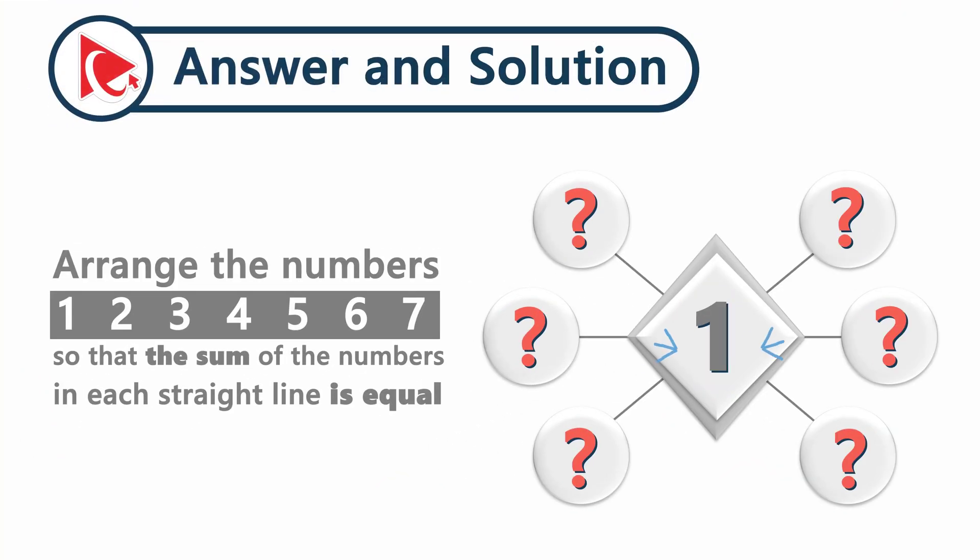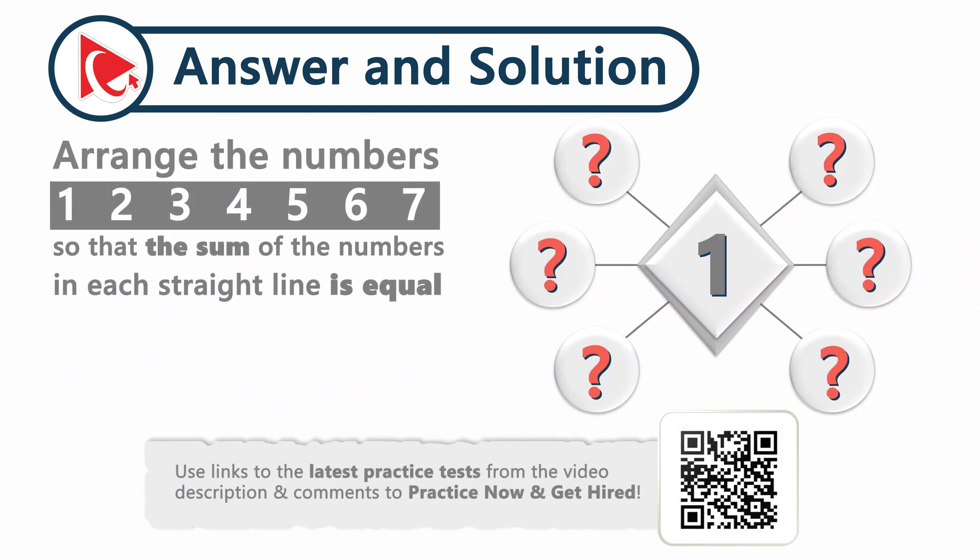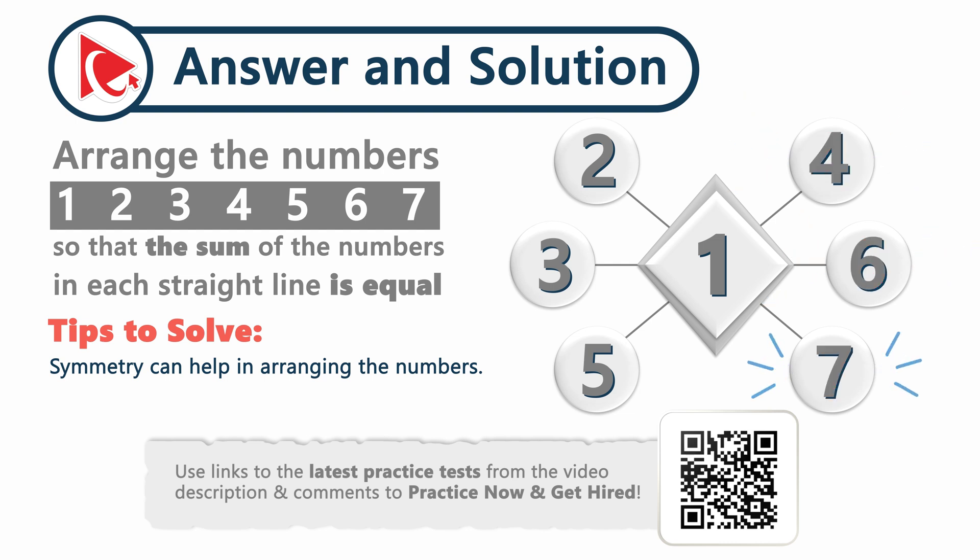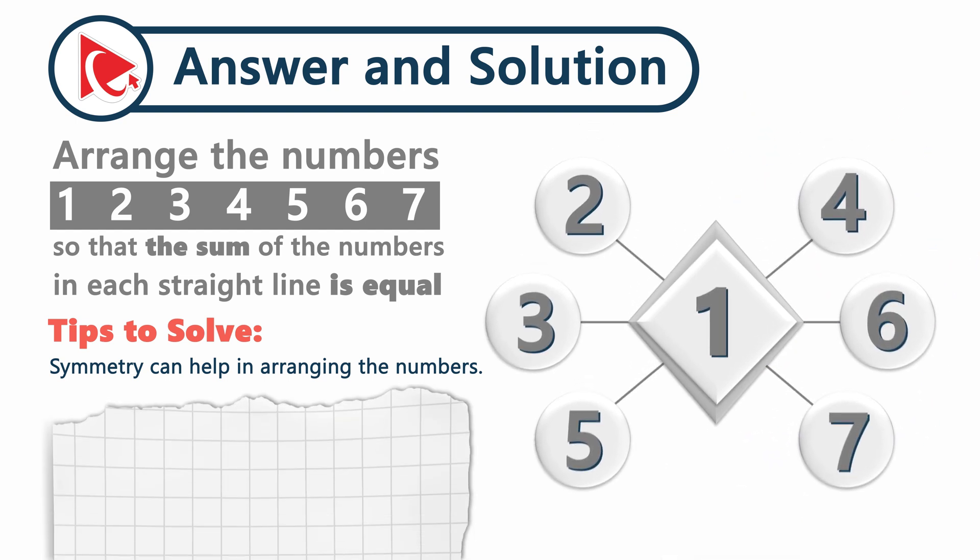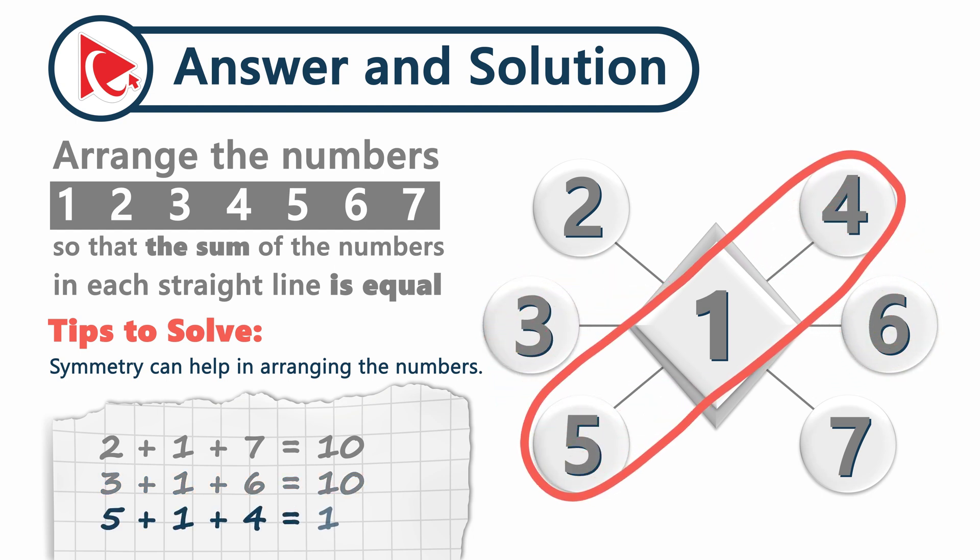Remember I shared with you a hint? Number one should definitely be in the middle. Here's another tip on how to solve these types of problems. Symmetry can really help us in arranging the numbers. Numbers 2, 3, and 5 would be on the left side, and numbers 4, 6, and 7 would be on the right. Now let's do the math to confirm: 2 plus 1 plus 7 equals 10. 3 plus 1 plus 6 also equals 10. And 5 plus 1 plus 4 also equals 10. Isn't this cool how we just solved it?